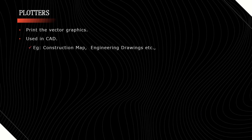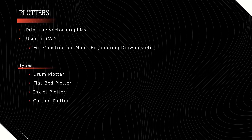Plotters are used to print vector graphics. These are mainly used in CAD — computer aided design — especially for engineering purposes. For example, they are used to print construction maps, engineering drawings, architectural plans, business charts, etc. We have four types of plotters: drum plotter, flatbed plotter, inkjet plotter, and cutting plotter.